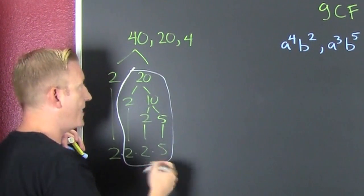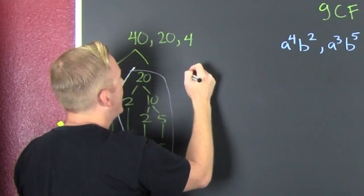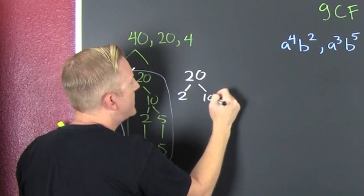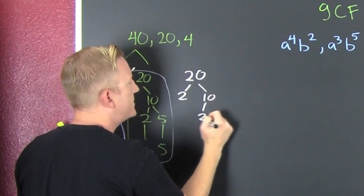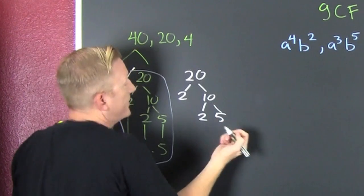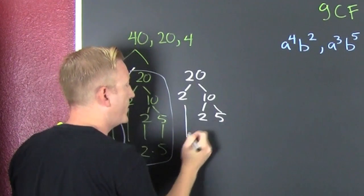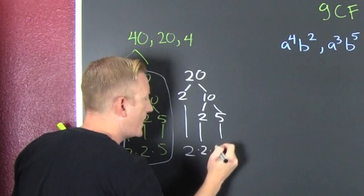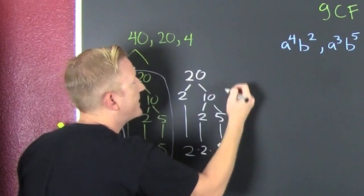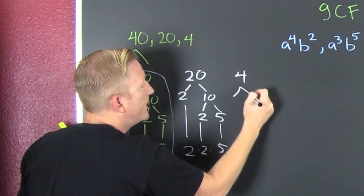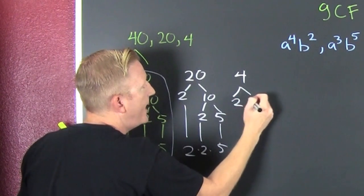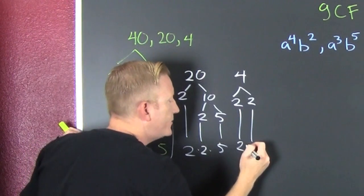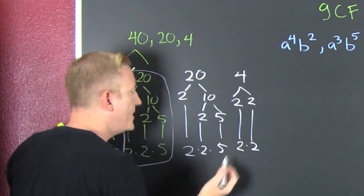Formally, 20 is 2 and 10, that's 2 and 5 — bring it on down: two times two times five. Then we break down 4: that's 2 and 2 — bring it — two times two.